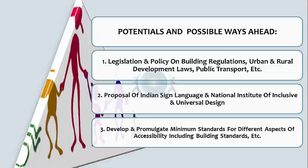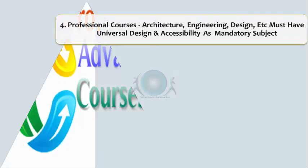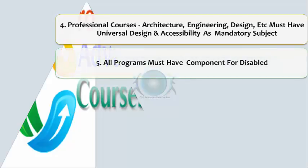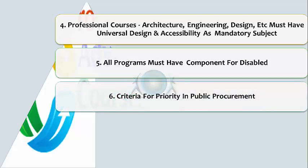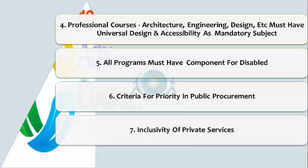There is a potential to develop and promulgate minimum standards for different aspects of accessibility, including building standards. Professional courses such as architecture, engineering, and design must have universal design and accessibility as a mandatory subject at the graduate level, so that future architects incorporate these aspects for PWDs. All programs must have a component for the disabled. There is also a need to evolve criteria for priority for PWDs in public procurement. Even private services and corporations will have to involve themselves in providing employment and other services for PWDs in India.